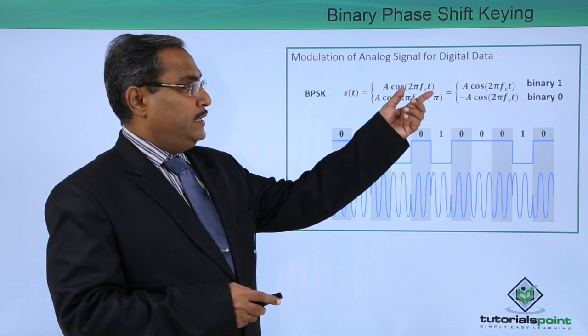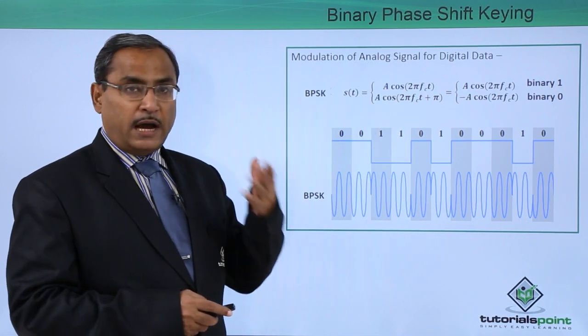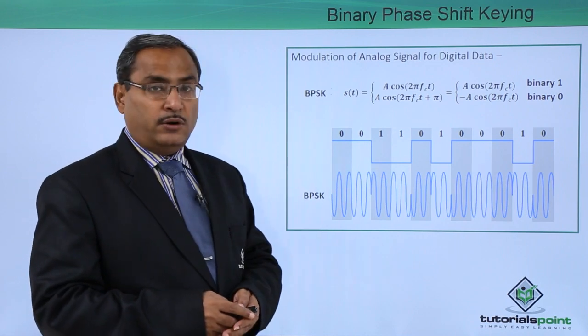A cos 2π fct for the binary one, and for the binary 0 it is A cos 2π fct plus π, that is minus A cos 2π fct.